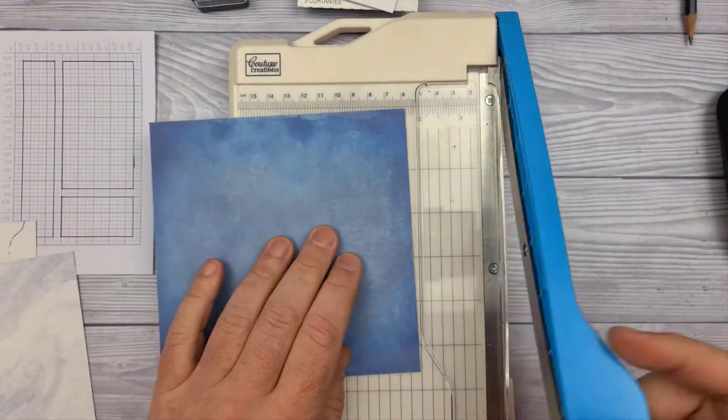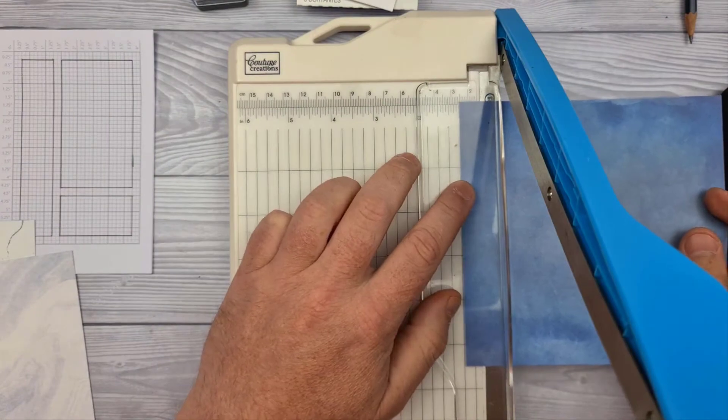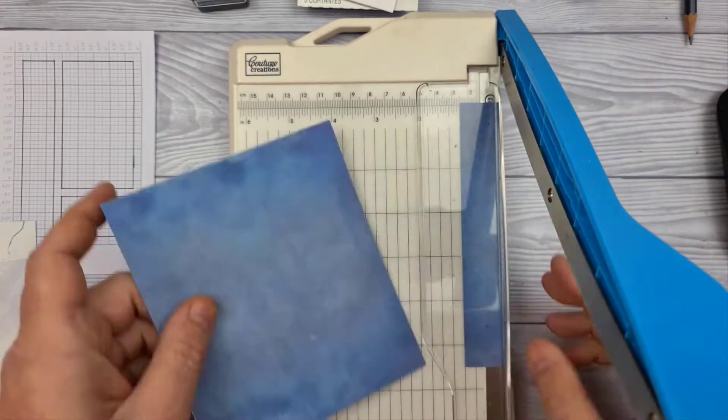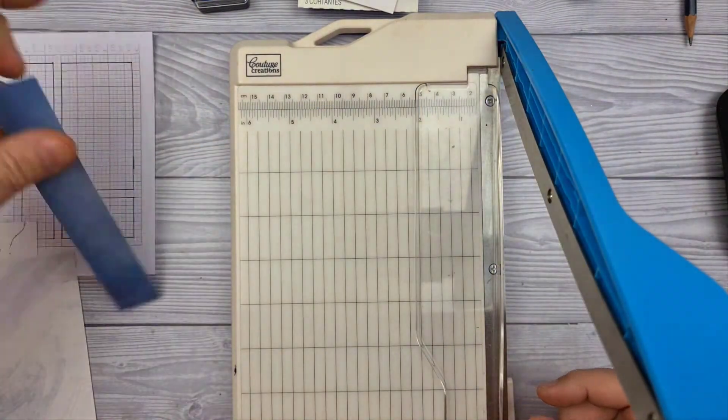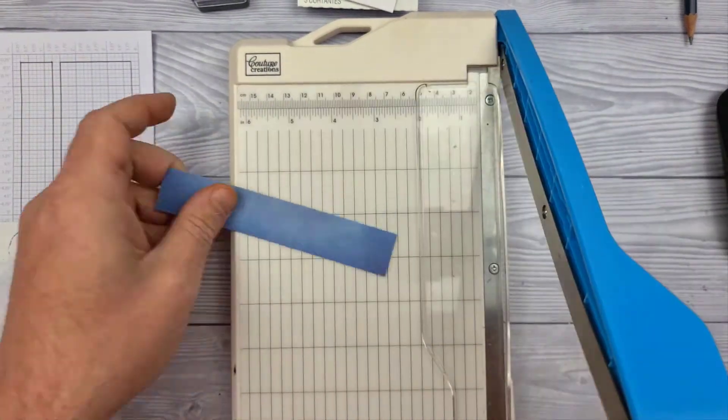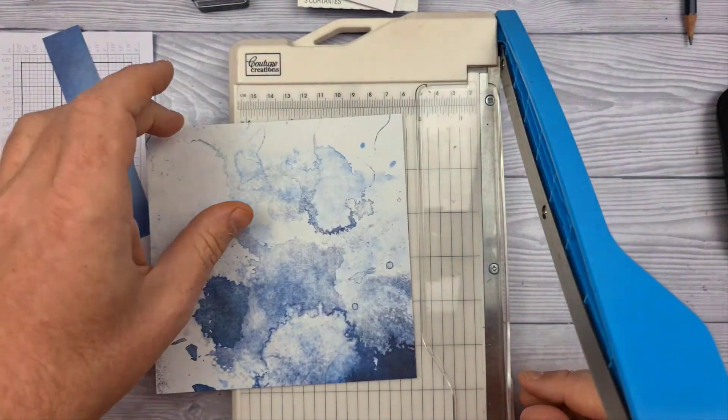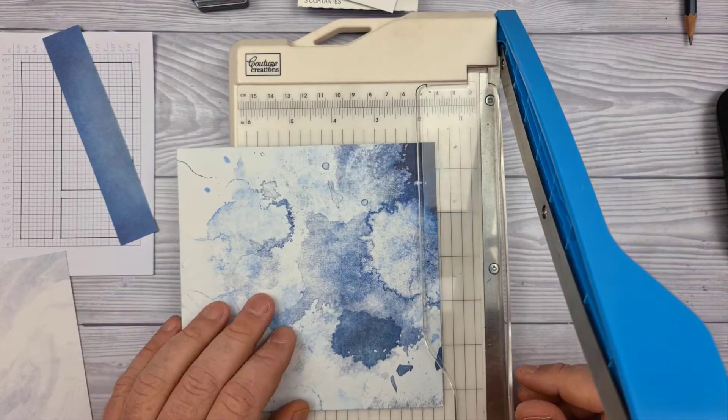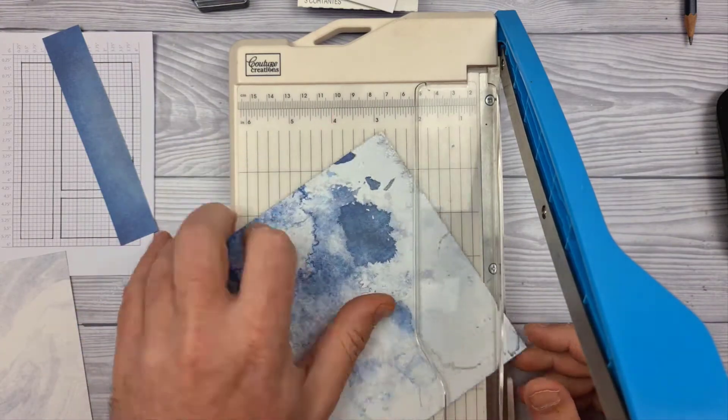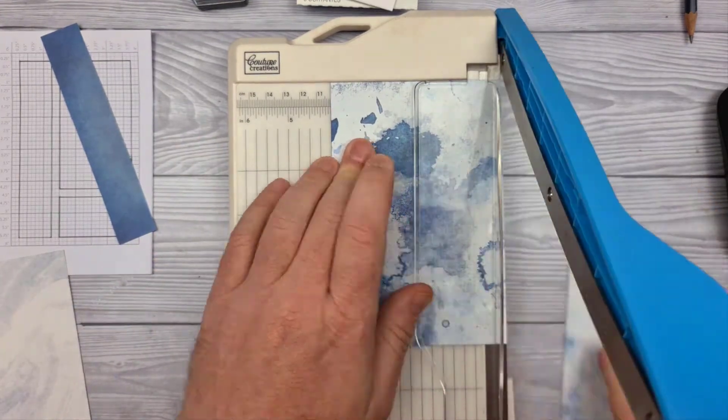Let's get started by chopping down the papers first of all. Now this one, when I was planning it, did have various different embossing effects and edging effects and all sorts going on, but in the end I kind of tried to keep it simple.